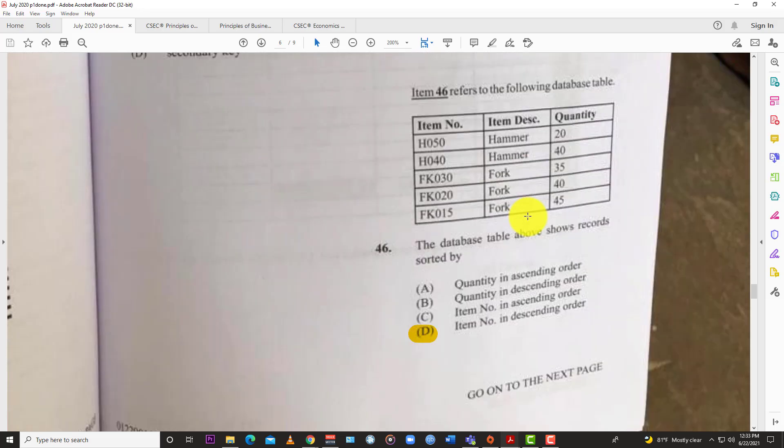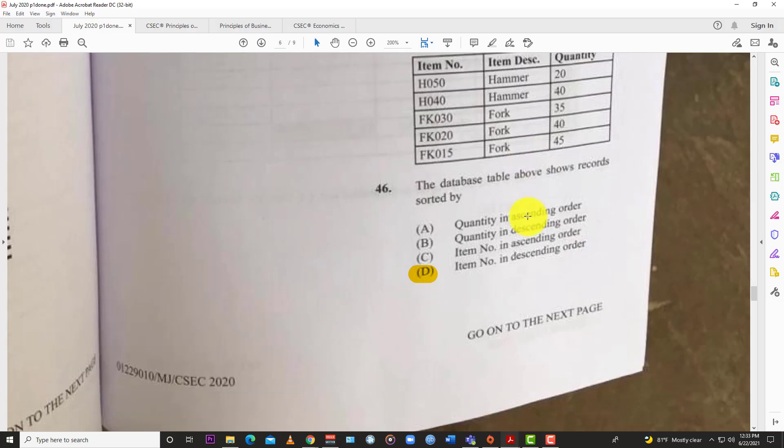Question 46: The database table above shows records sorted by, and the best answer here is D, items in descending order. You can see the different items right there: hammer, hammer. That's the item, but they have them in descending order in terms of the quantity. You have hammer 20, hammer 40, then fork 35, fork 40, fork 45. So it's like two different criteria—the item number, and then the descending order.